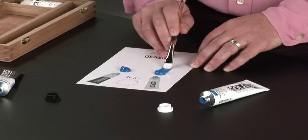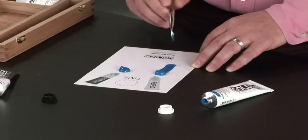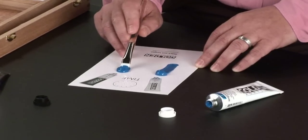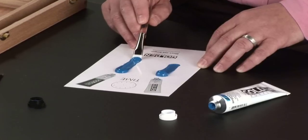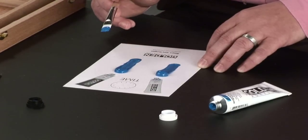We're going to be brushing down a little bit of heavy body paint on one side of the card and a small amount of the open acrylics on the other side. We're going to let this rest for about 10 minutes.